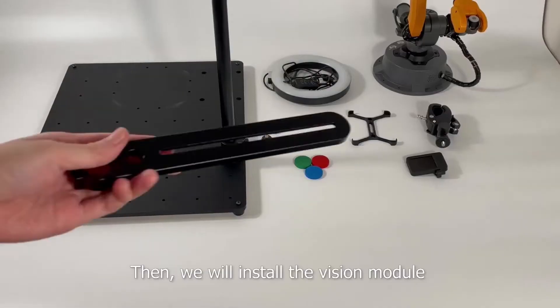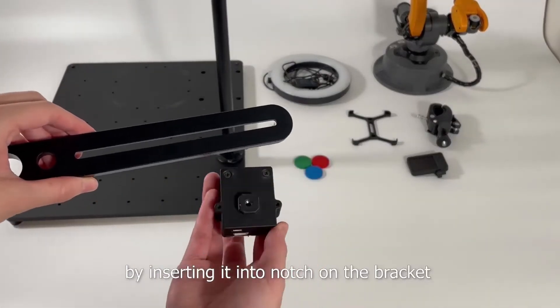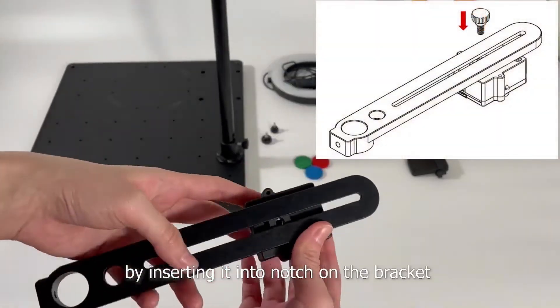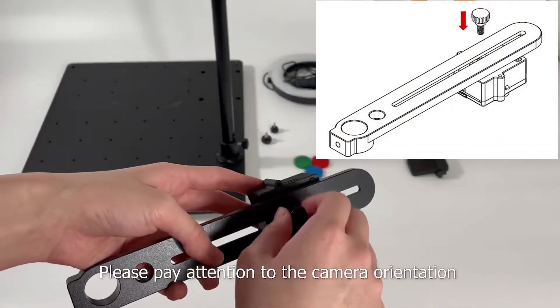Then, we will install the vision module by inserting it into the notch on the bracket. Please pay attention to the camera orientation.